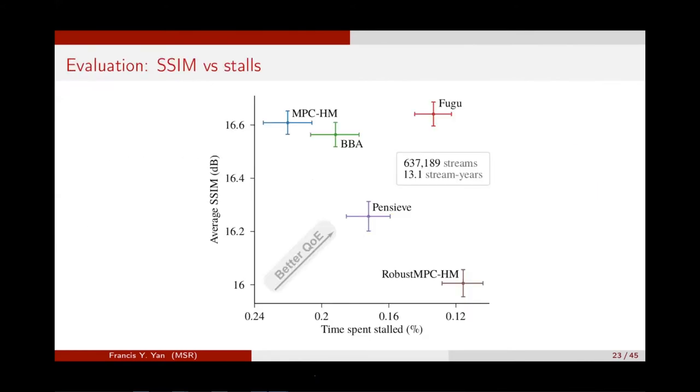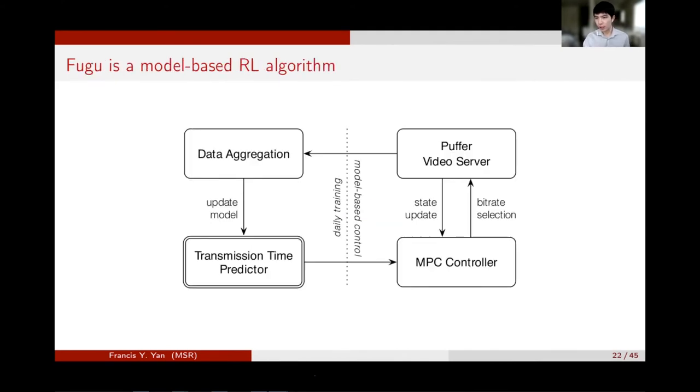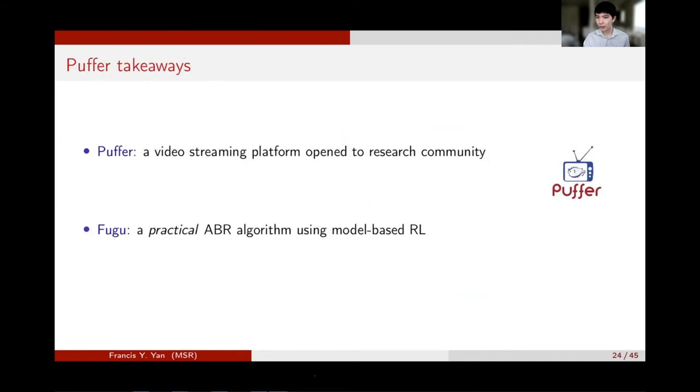Now I'd like to conclude Puffer by summarizing the takeaways. There's a question here. What is the computation overhead of the method? Is it fast enough? Okay, that's a good point. So the neural network we used is a shallow network. It only has two layers, each with 64 neurons and the input and output space. The input dimension and output dimension are not huge either. So the computational overhead is pretty minimal. It can be done within several milliseconds, typically one or two milliseconds on our machine. So computation is not an issue.